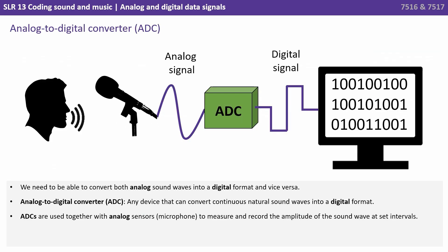So we need to be able to convert both analogue sound waves into a digital format and vice versa. To convert from analogue to digital we use an ADC — an analogue to digital converter. This is any device that converts continuous natural sound waves into a digital format. ADCs are used together with analogue sensors such as microphones to measure and record the amplitude of the sound wave at set intervals.